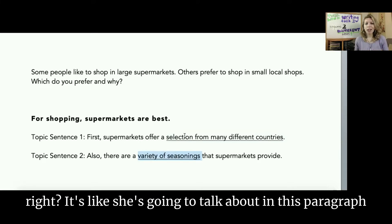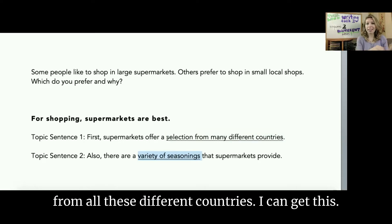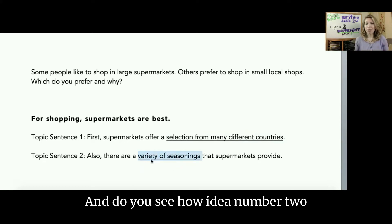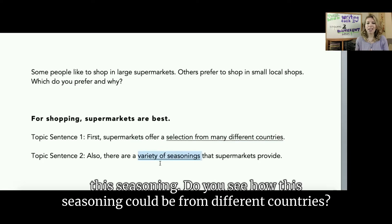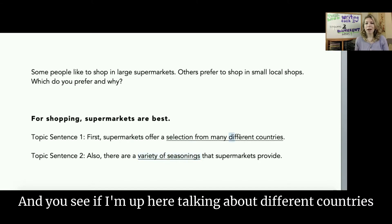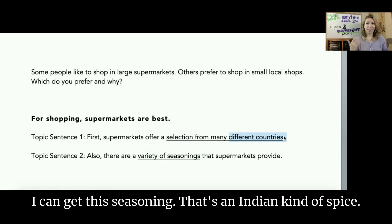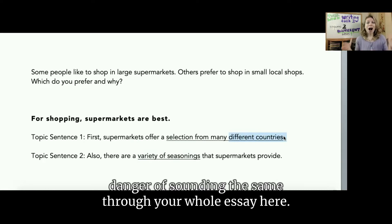The first idea is there's a selection from many different countries, and the second is there's a variety of seasonings. They are a little bit different, but do you see how they're really very similar? She's going to talk about variety from all these different countries — I can get this, I can get that. And idea number two also talks about variety — I can get this seasoning, this seasoning, this seasoning. Do you see how seasonings could be from different countries? So if you're up here talking about different countries, you could start to talk about an Indian kind of spice, for example. There is a danger of sounding the same through your whole essay.